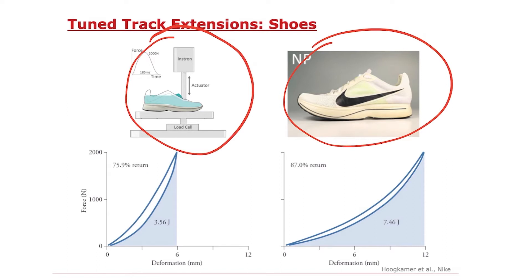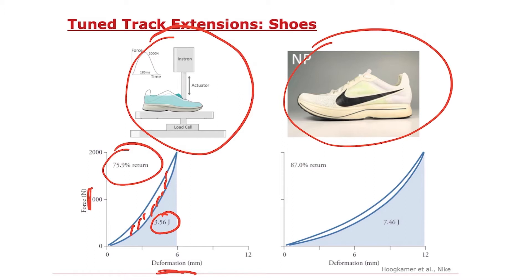A comparison between this prototype shoe and a standard marathon running shoe revealed that the prototype stored more elastic energy and returned a higher percentage. The force versus deformation curve for the standard shoe shows that a single compression and relaxation stored and returned 3.56 joules — 75.9% efficient. The energy lost is shown in this area here. The Nike prototype was more efficient at 87%, storing and returning 7.46 joules, with a smaller area of lost energy.